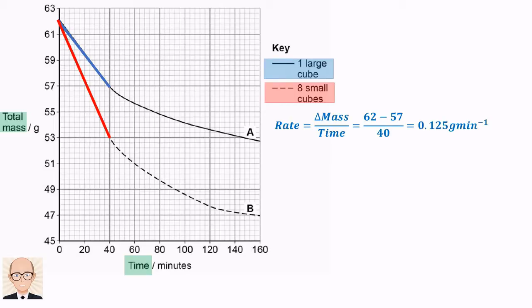So for the large cube, this would be the change in mass from 62 grams to 57 grams divided by the 40 minutes, giving a rate of 0.125 grams per minute.